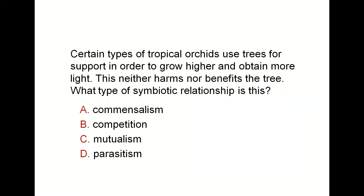Certain types of tropical orchids use trees for support in order to grow higher and obtain more light, yet neither harm nor benefit the tree. This is one kind of symbiosis — a food relationship. It's commensalism: a relationship between two different species in which one gets benefit and the other neither harms nor benefits.